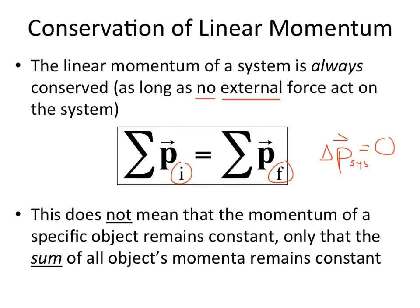Not every part of the system is necessarily going to have the same momentum, but if you take all the parts — the sum of all the objects in the system — and add up all their momenta (momenta is the plural of momentum), they're going to add up to zero if there is no net external force on the system.